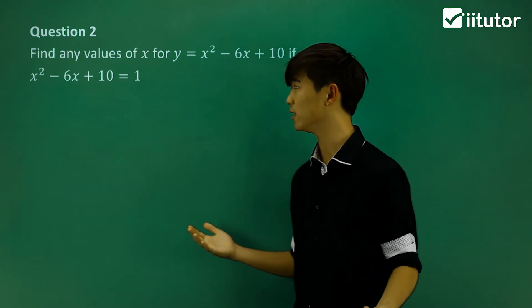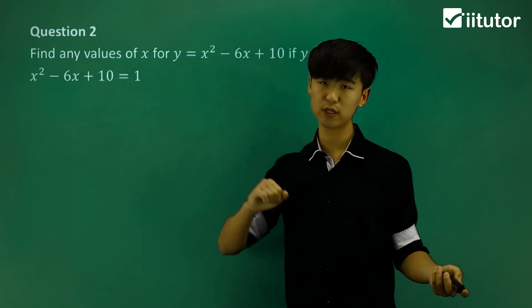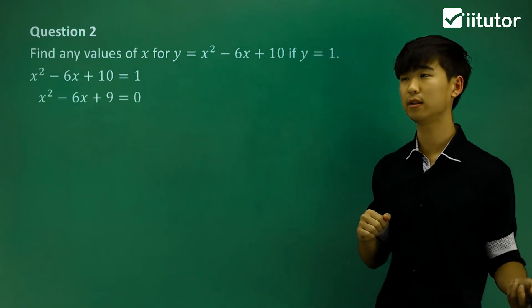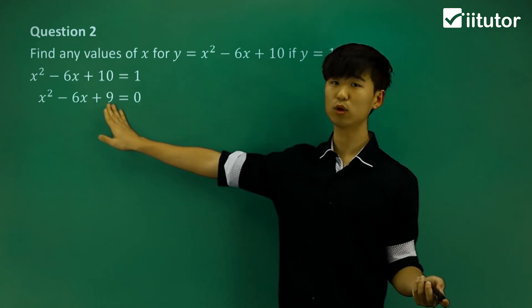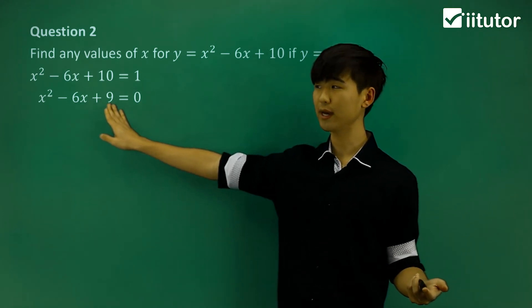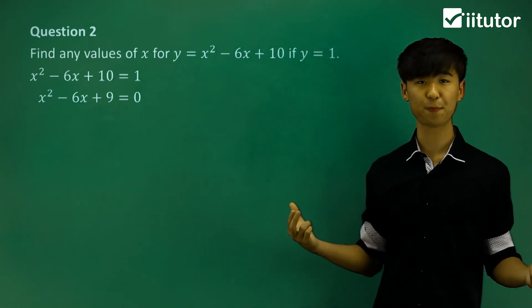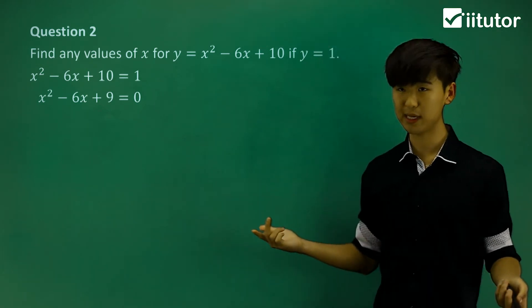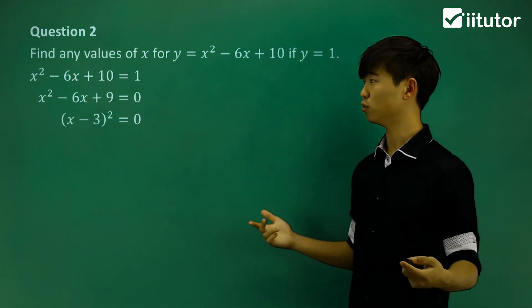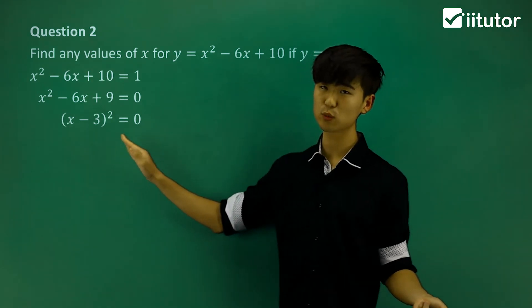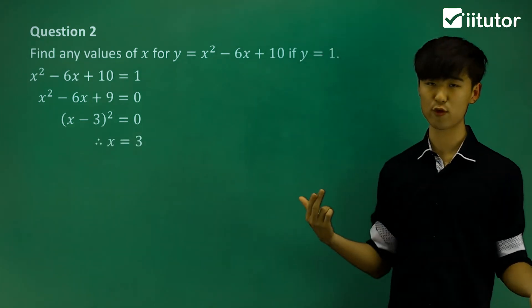We're going to try and solve it again — find the value of x. I want to move everything to the other side so the whole thing equals 0, then I want to factorize. So how do we factorize x² − 6x + 9? This is in fact going to be a perfect square. We get (x − 3)² = 0, so x = 3.